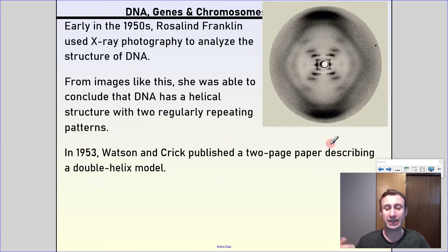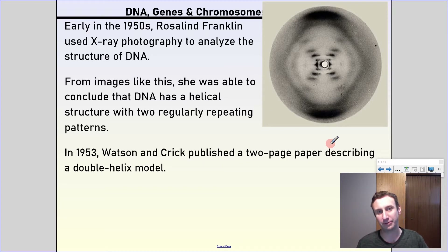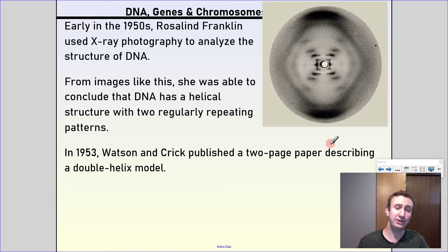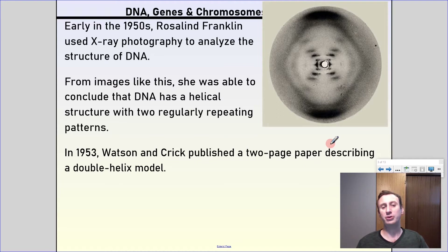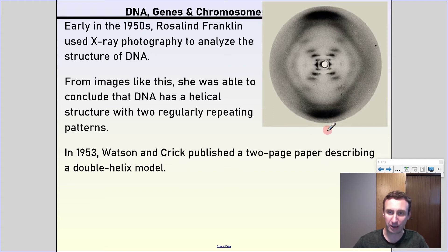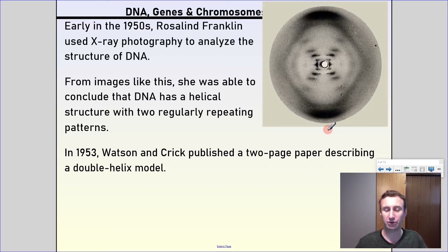The history of how DNA was discovered: back early in the 1950s, Rosalind Franklin used x-ray photography to analyze the structure of DNA. From the images she came up with, she was able to conclude that DNA has a helical structure with two regularly repeating patterns. This is actually a picture of that x-ray photography, and from this the structure of DNA was kind of determined.